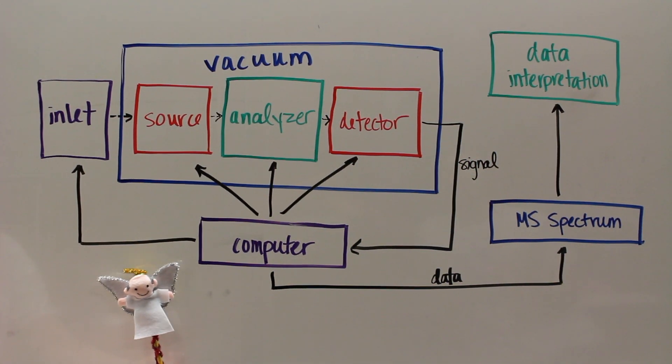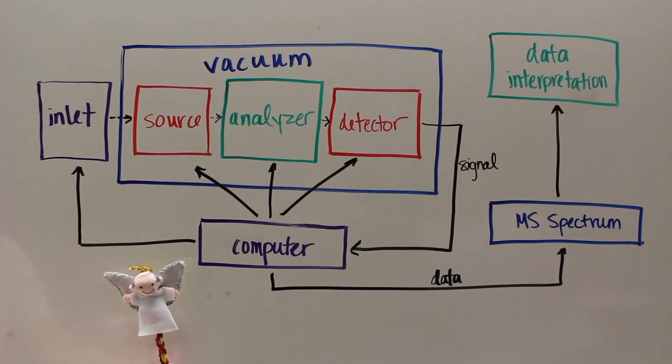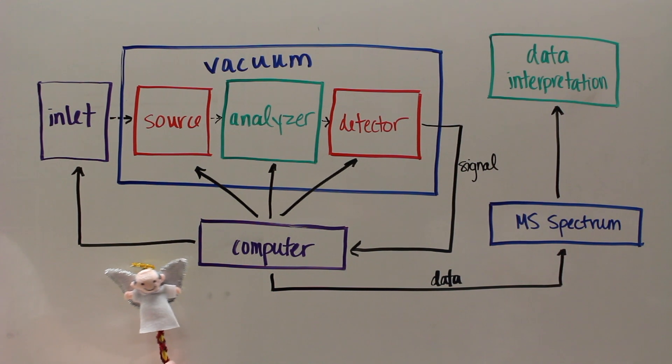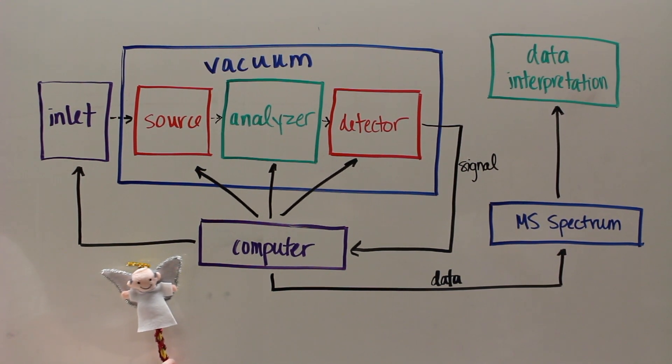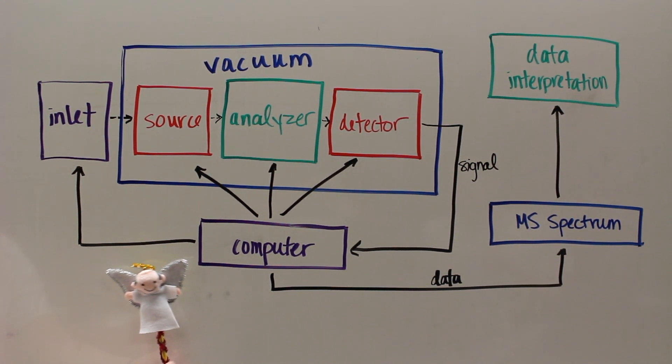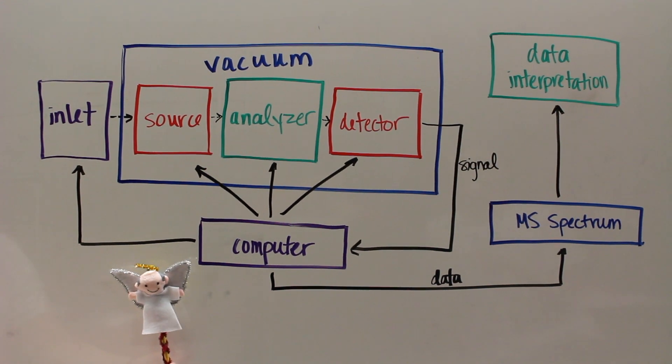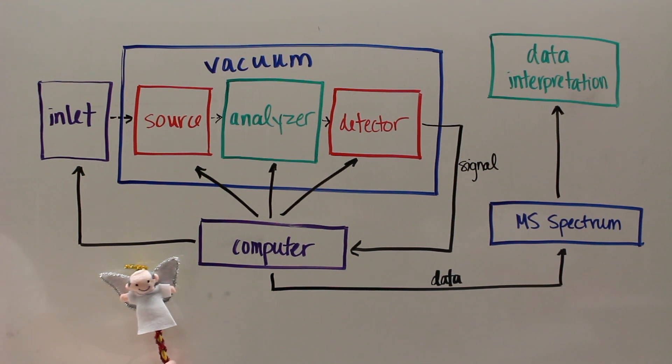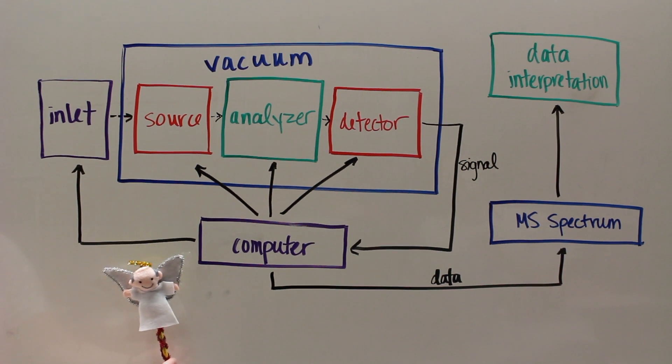This is a setup of a basic mass spectrometer. The sample starts at the inlet before it is introduced at the source. At the source, everything has to be in vacuum conditions in order to create a controlled environment for such precise measurements. At the source, the compound is broken into fragmented ions using strong electrical and magnetic fields and high velocities. After it is detected by the machine, a signal runs through a computer and a lot of programs before it is turned into the chart that we analyze.